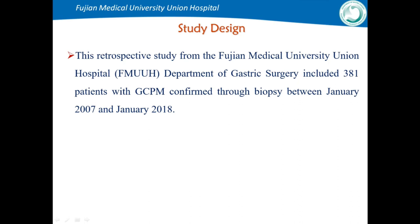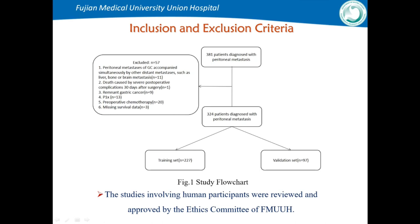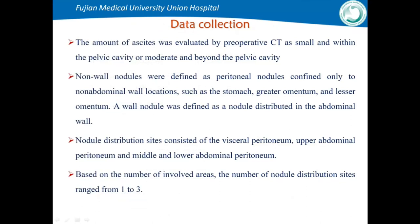Our retrospective study included 381 patients, and after applying inclusion and exclusion criteria, 324 cases were analyzed. This was evaluated by preoperative CT. Non-wall nodules were defined as preoperative nodules confined only to non-abdominal wall locations, while wall nodules were defined as nodules distributed in the abdominal wall. Nodule distribution size ranges from 1 to 3 based on the number of involved areas.